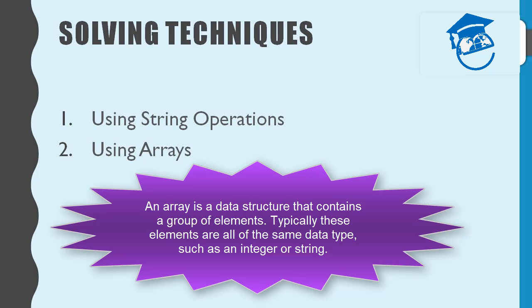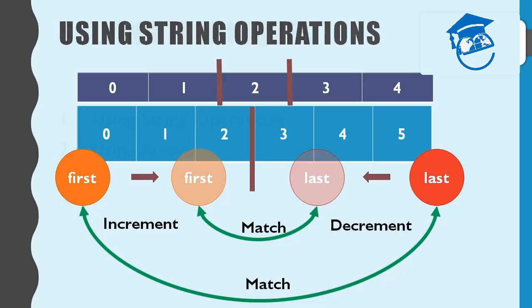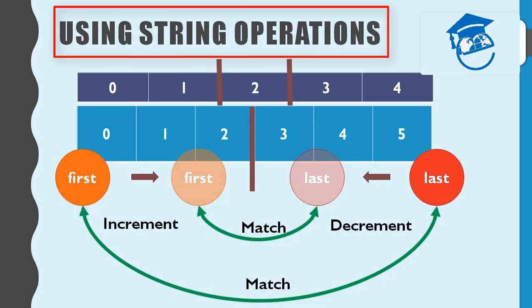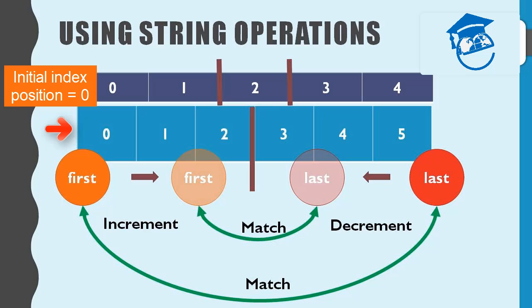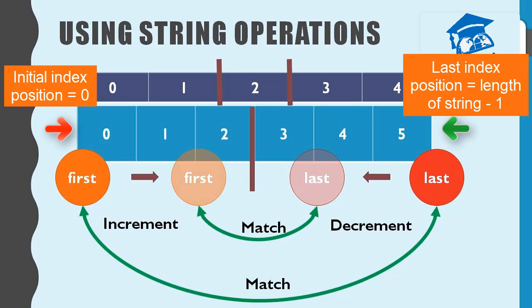Before start coding I'll show you the design of our program. It is important to have a design before start coding. We need two variables: the variable 'first' holds the index positions from the front, and the variable 'last' holds the index positions from the back. The initial value of 'first' should be zero, representing the zeroth index position, and the initial value of 'last' should be the last index position — the length of the string minus one.